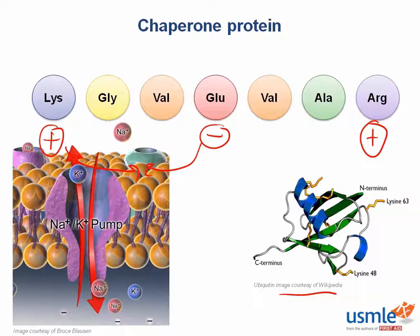Chaperone proteins are there to direct the folding of other proteins so that they end up in the right structure. Depending on the protein, they can do this in a few different ways, but one way is to form a large multiprotein chaperone structure — kind of like a barrel — that newly synthesized proteins can be imported into. Once inside, they're able to fold much more easily because the polar amino acids in the inner wall of this barrel help push all the nonpolar amino acids in the new protein towards the inside.